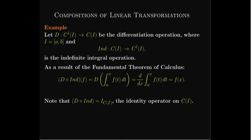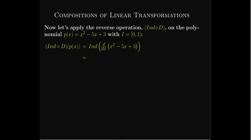Whatever you put into that composition, you get the exact same thing back out. This means D is a left inverse of the indefinite integral operator. But what if we change the order? Instead of D composed with the indefinite integral, let's try the indefinite integral composed with D, using an example: the quadratic polynomial x² - 5x + 3 on the closed interval from 0 to 1.